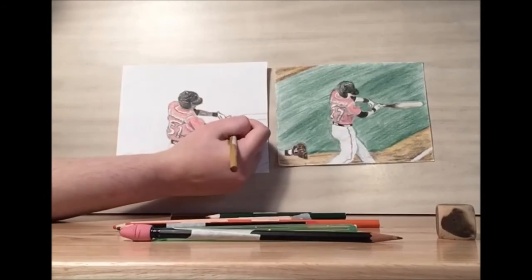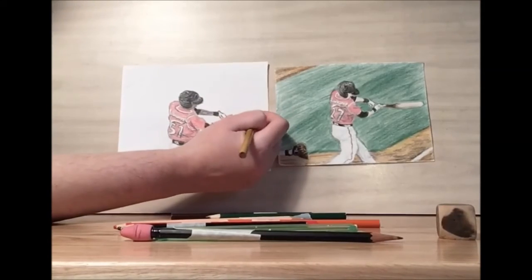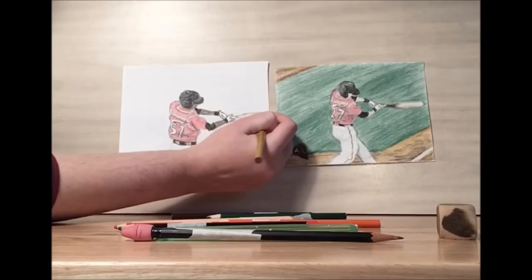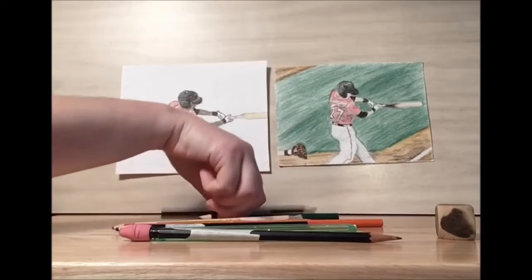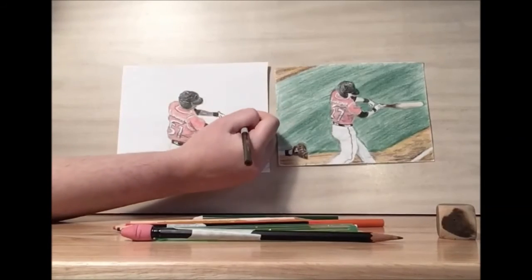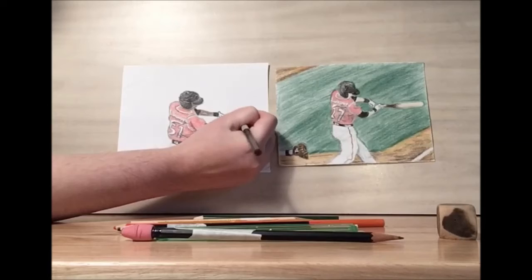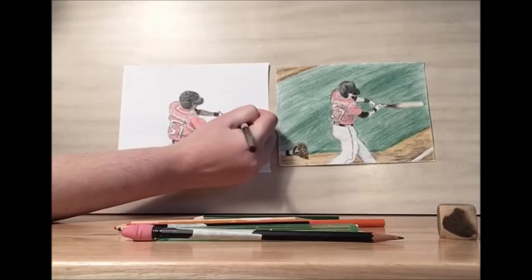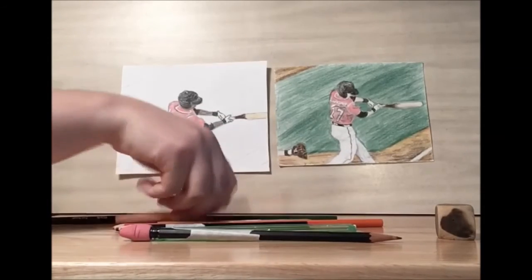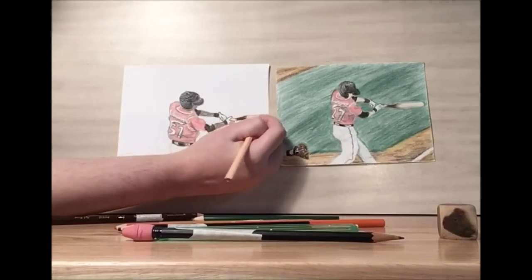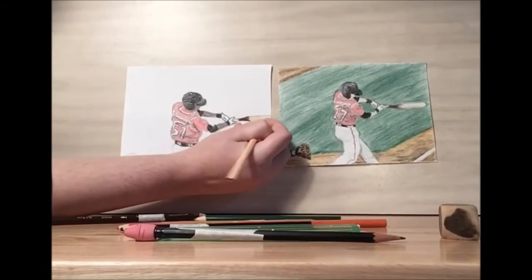Now for the bat, I'm going to take a sandy color. And you want to draw horizontal lines to show the wood grain. I'm going to take that brown and add in some color. And I'll use a peach tone to blend it all up.